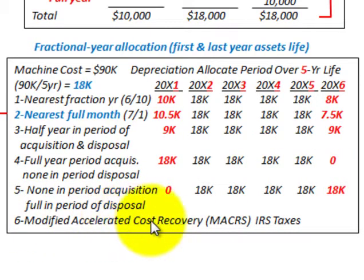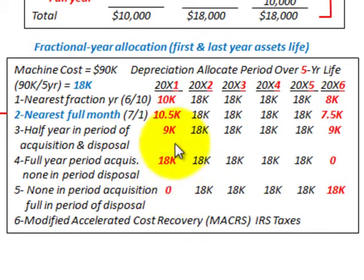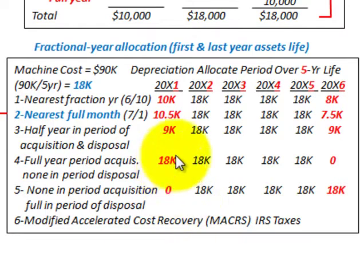Method 6 — Modified Accelerated Cost Recovery System (MACRS): This is for IRS tax purposes and has its own tables — it's a separate issue. What we're looking at here is GAAP-type accounting, but for taxes you must use the cost recovery system.